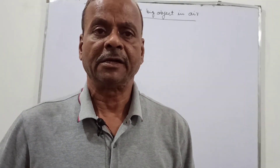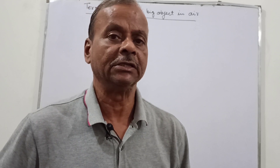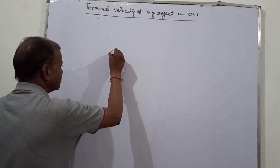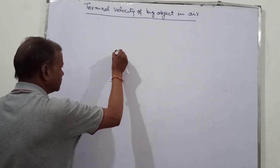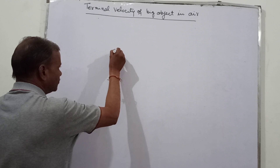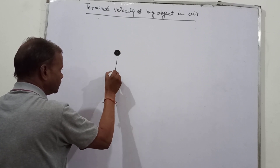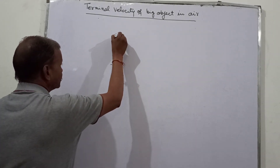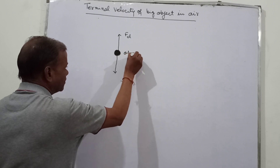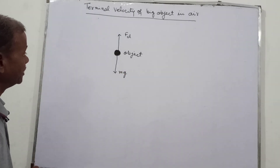Now we will talk about the terminal velocity of big objects in the air. The drag force acts on the body which is falling vertically downward in the air. Let this be an object falling vertically downward. The drag force Fd acts on the body in the upward direction, while Mg, the weight of the object, acts downward.